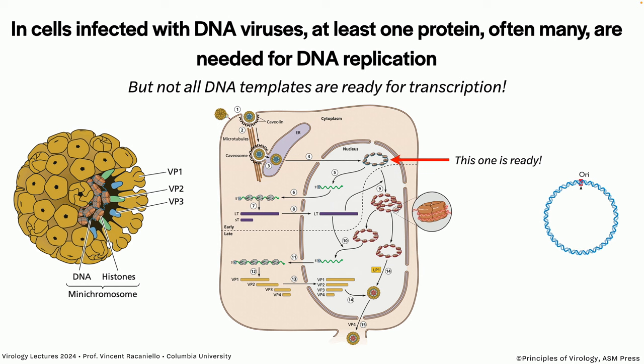Not all viral DNAs are ready for transcription. The important rule is that you cannot do transcription — the synthesis of mRNA from DNA — unless the DNA is double-stranded; it cannot ever happen otherwise. Some viral genomes are not double-stranded in the particle. When I say 'viral genome,' I mean the nucleic acid in the particle — not what may be in the cell. A good example is retroviruses: the genome is RNA, but in the cell you find double-stranded retroviral DNA.